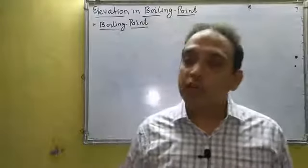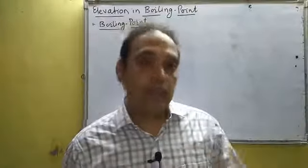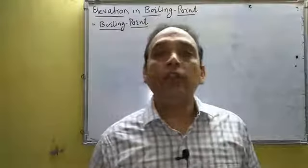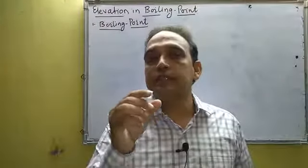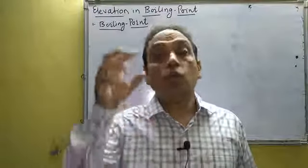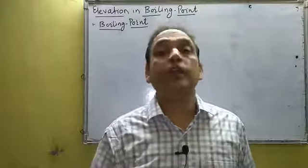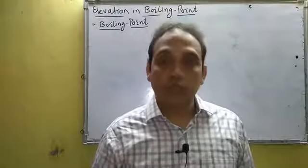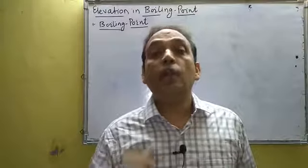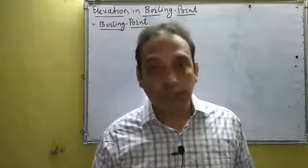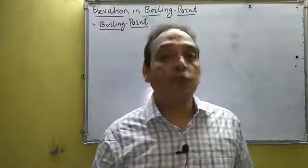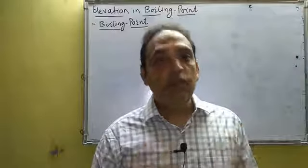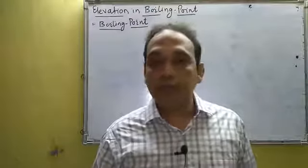In video lectures two and three, we discussed the first colligative property — relative lowering in vapor pressure — in detail. We started from vapor pressure, lowering in vapor pressure, relative lowering in vapor pressure, and then Raoult's law. Two statements of Raoult's law were discussed: Raoult's law for binary solution and for non-volatile solute. We also covered how to determine the molecular weight of solute (M2) by elevation in boiling point.